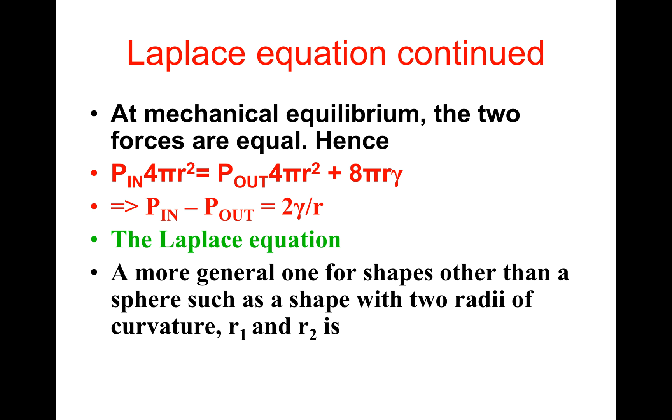A more general form for shapes other than a sphere, such as a shape with two radii of curvature R₁ and R₂, is P_in minus P_out equals γ times (1/R₁ plus 1/R₂).